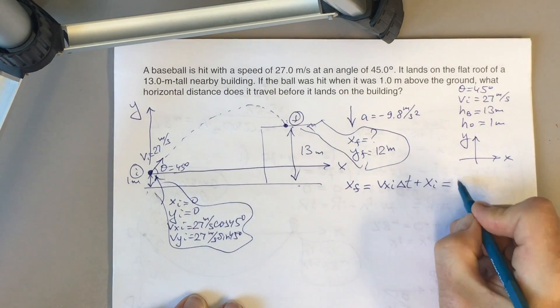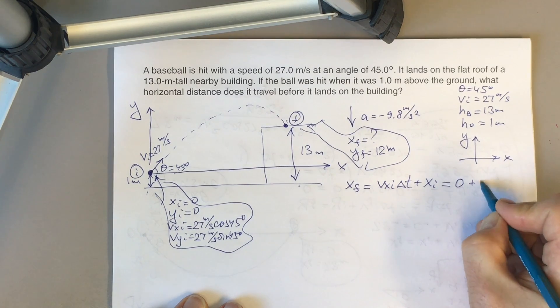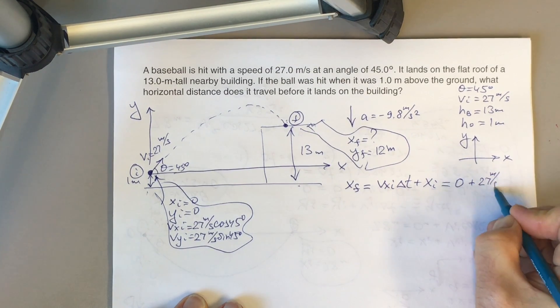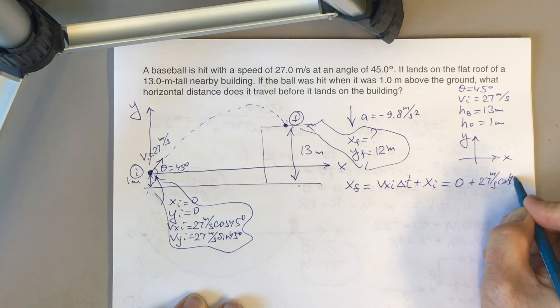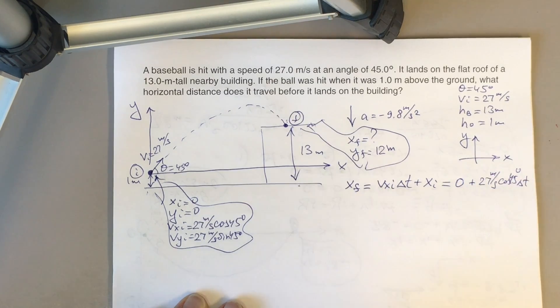x-initial is 0. So then we have 27 meters per second times cosine 45 degrees times delta t. And we will be able to find our final distance if we can find delta t.